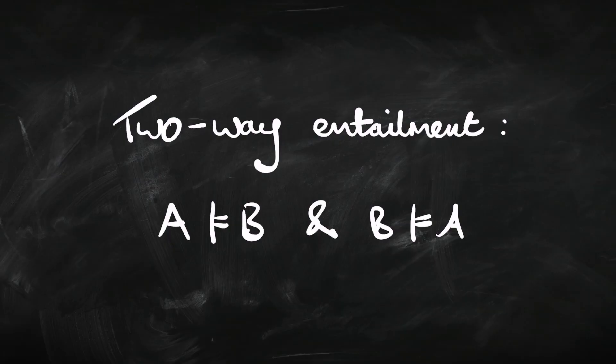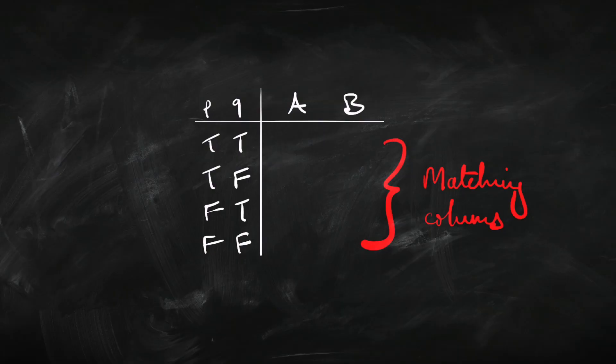When we have two sentences A and B, they are equivalent just in case A entails B and also B entails A. Logical equivalence means that the truth table for A is exactly the same as the truth table for B — so in every line, if there's a T for A there's got to be a T for B, and if there's an F for A there's got to be an F for B.